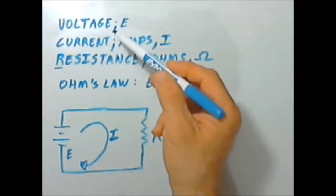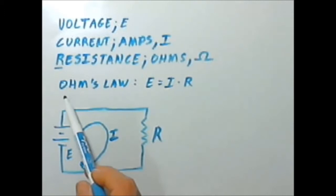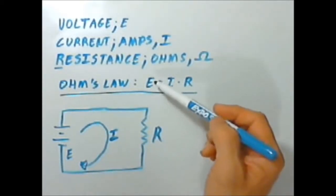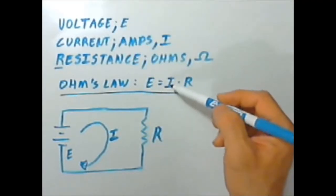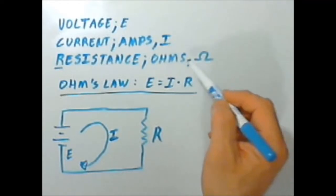And these three concepts, voltage, current, and resistance, are all tied together with this simple math equation called Ohm's Law. So E, or voltage, is equal to I, or current, times R, or resistance in Ohms.